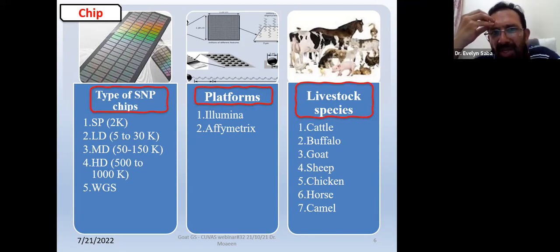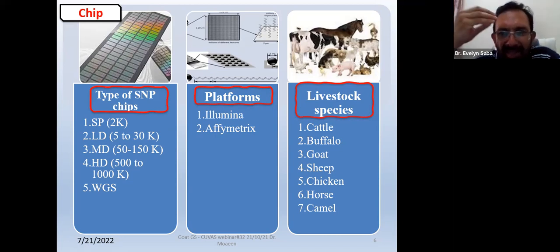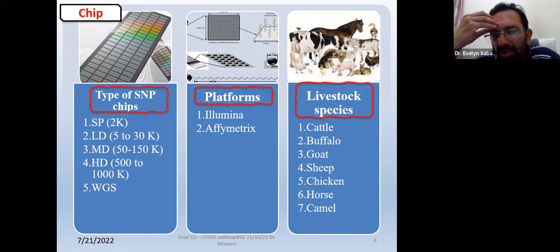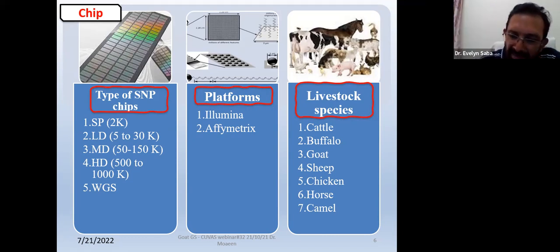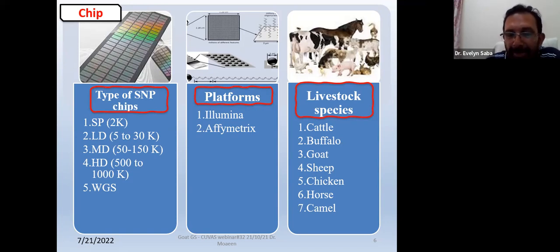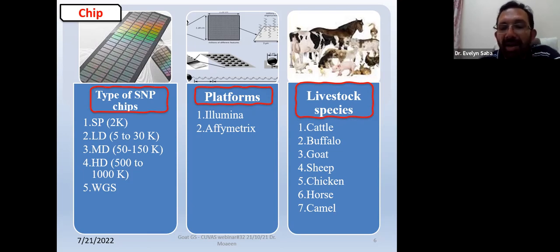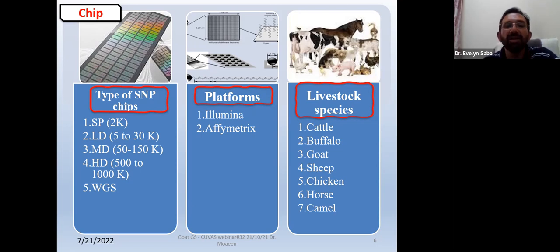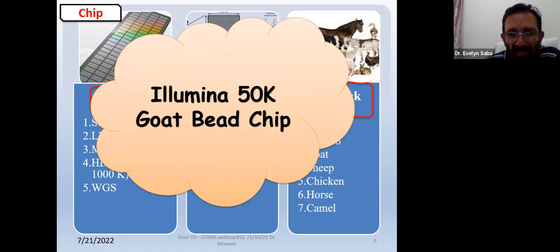There are two platforms commercially available: Illumina and Affymetrix. These are two companies which develop the chips and make the analysis for you. In livestock species, chips of different sizes are available for cattle, buffalo, goat, sheep, chicken, horse, and camel. Similarly, in case of crops and cash crops, these chips are all available. Anyone interested in such a project must have enough funding to develop a prediction equation. Once you have the prediction equation, it's quite easy to predict the performance of crops or animals without having their phenotypic data.